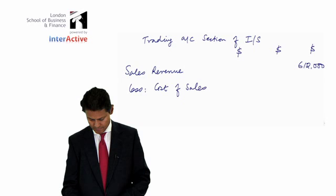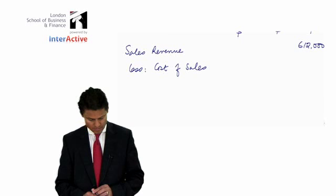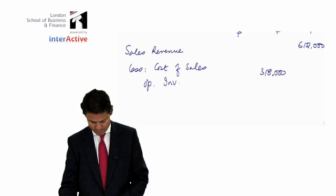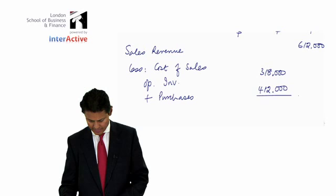You can see in your handout that the sales revenue goes up into the outside column: £612,000, less what's known as cost of sales. Cost of sales, which is the opening inventory...